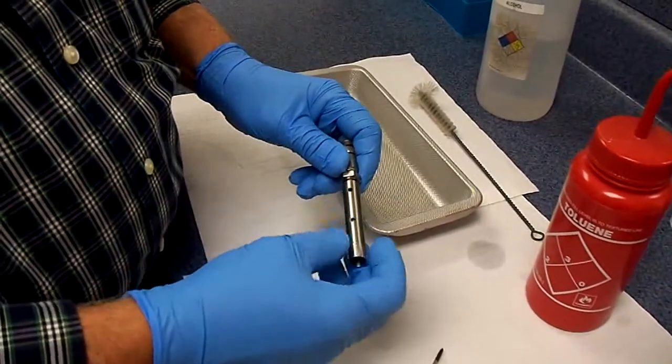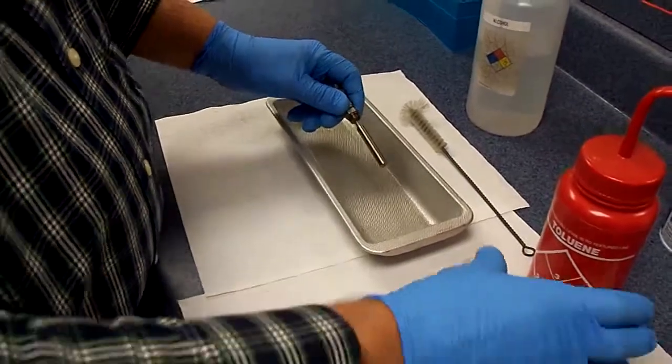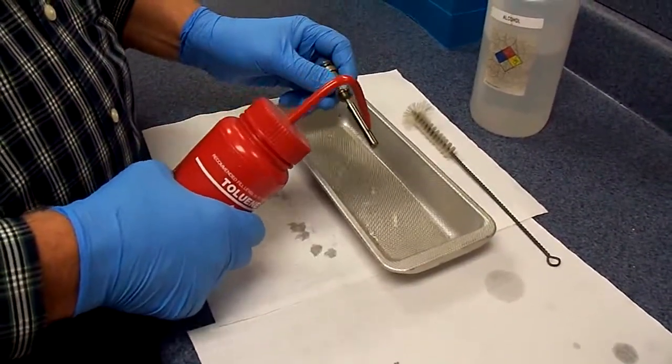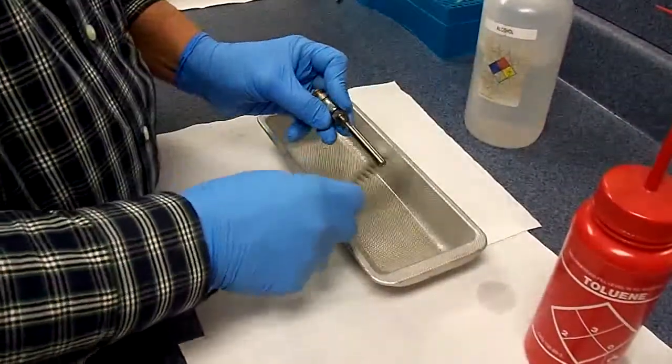Unscrew the outer electrode. Rinse with Tylene. Scrub it a little bit.